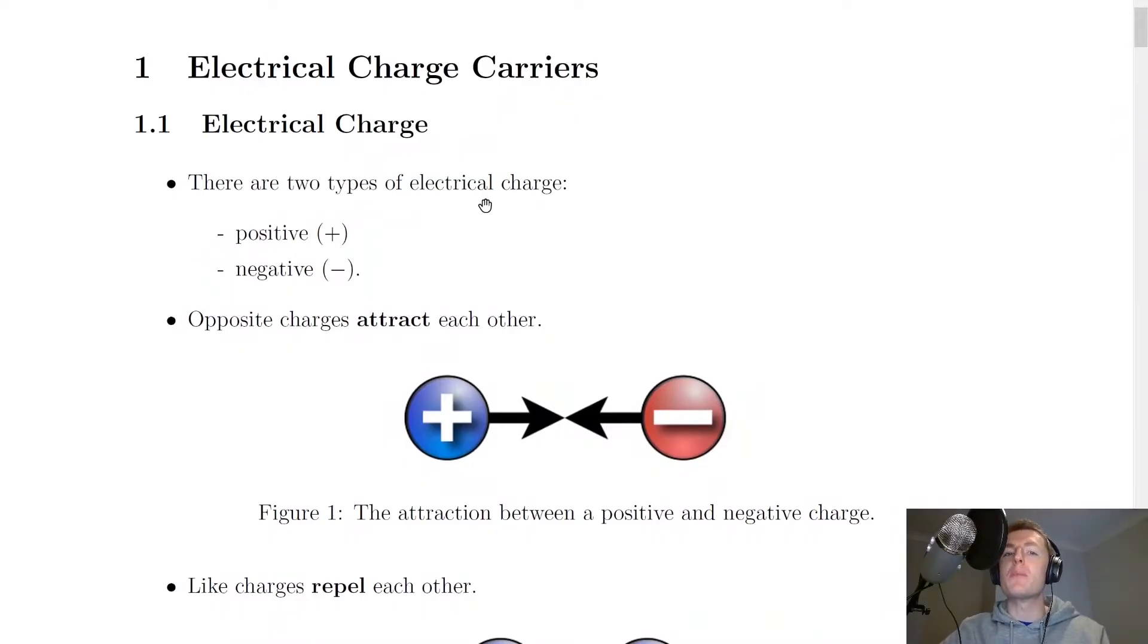The first thing to point out is that there are two types of electrical charge, positive and negative. And different things happen when you have positive and negative charges interacting with each other.